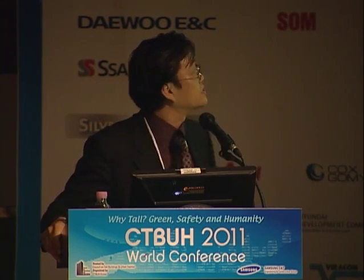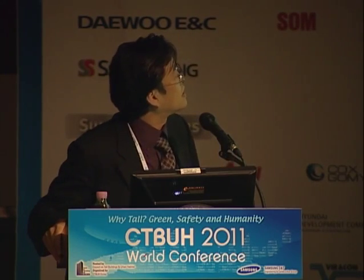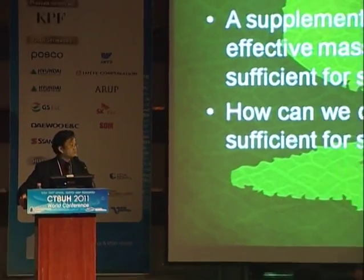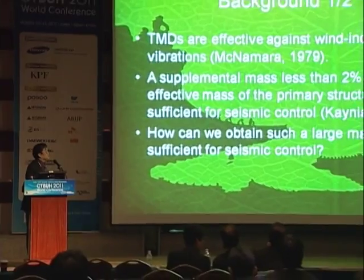It is well known that TMD tuned mass dampers are effective against wind-induced vibrations. However, a supplemental mass less than 2% of the effective mass of the primary structure is not sufficient for seismic control. So the question is: how can we obtain such a large mass sufficient for seismic control?